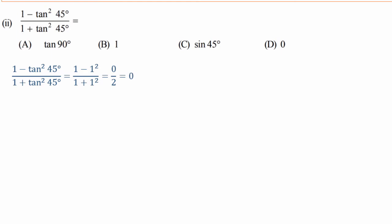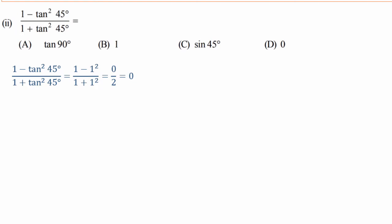So tan squared 45: tan45 is 1, so tan squared 45 is 1 squared, which is 1. Numerator: 1 minus 1 equals 0. Denominator: 1 plus 1 equals 2. Therefore, 0 divided by 2 equals 0. The correct answer is 0.